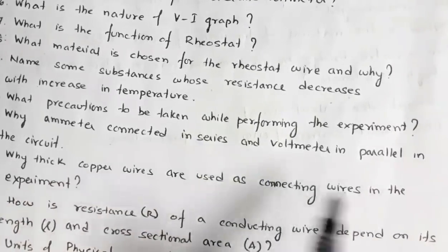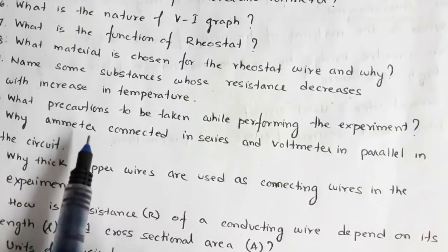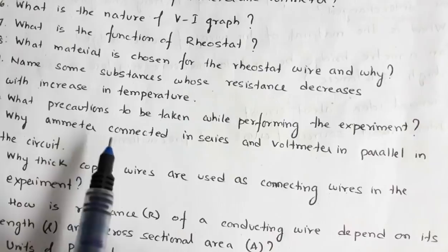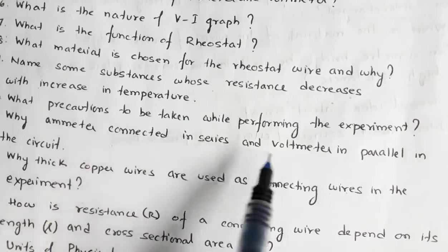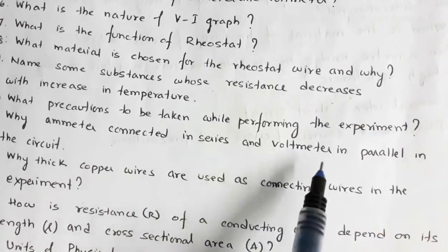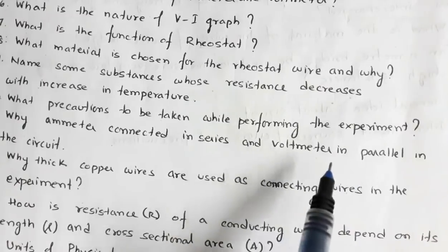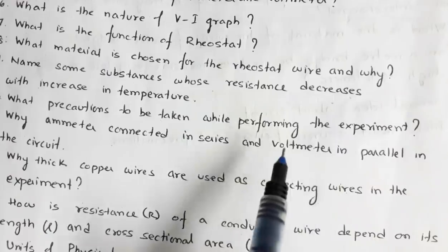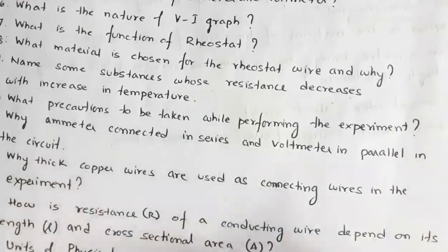Why is the ammeter connected in series and the voltmeter in parallel in a circuit? The ammeter is a low resistance device and it is used to measure current, hence it is connected in series. The voltmeter is a high resistance device and it is connected in parallel because in parallel you have the same potential across the terminals.